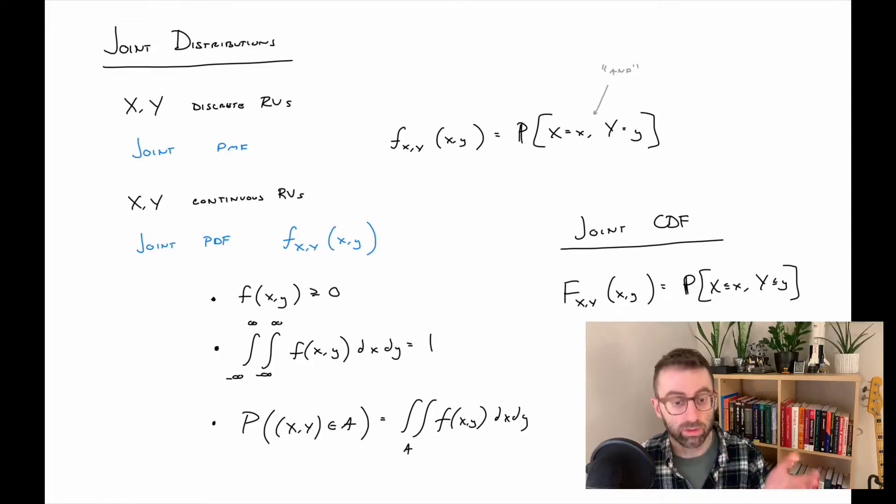For a discrete random variable, we can talk about the joint PMF, that is probability mass function, which is literally just the AND probability that's relevant there. And then in the continuous case, we can talk about the joint probability density function, which has these properties that we see here, which are similar to the single variable case.